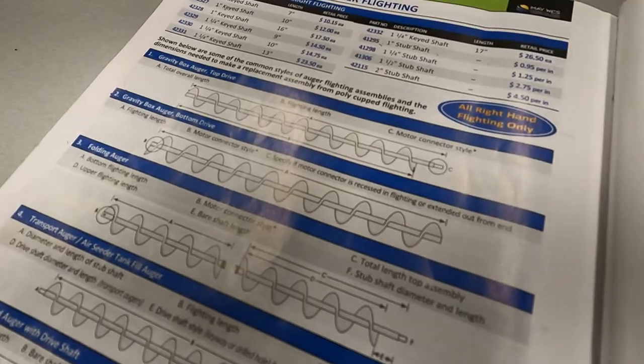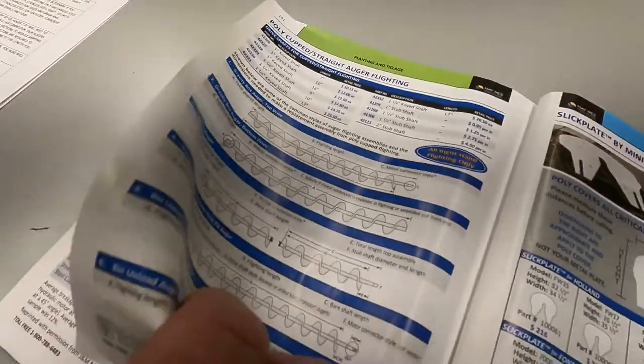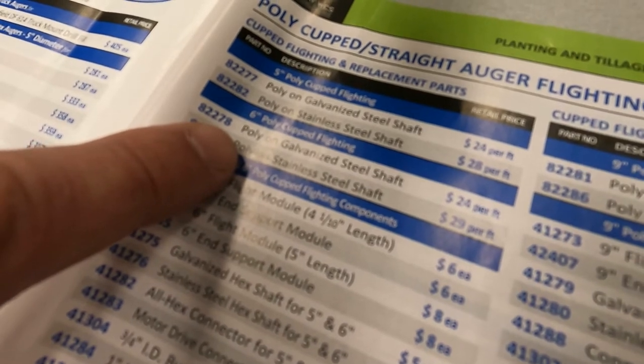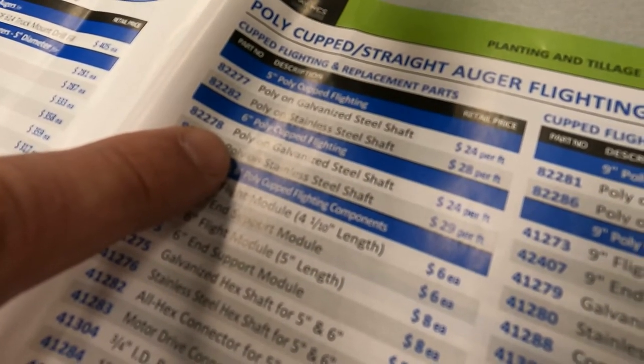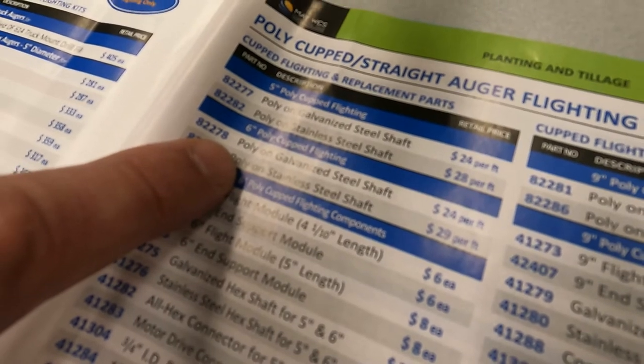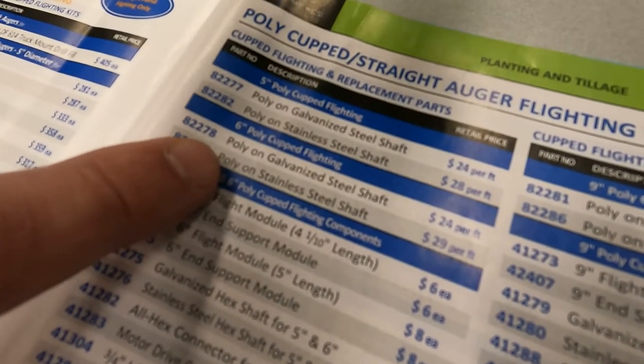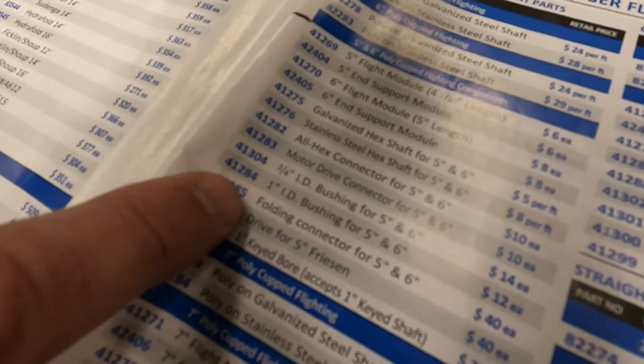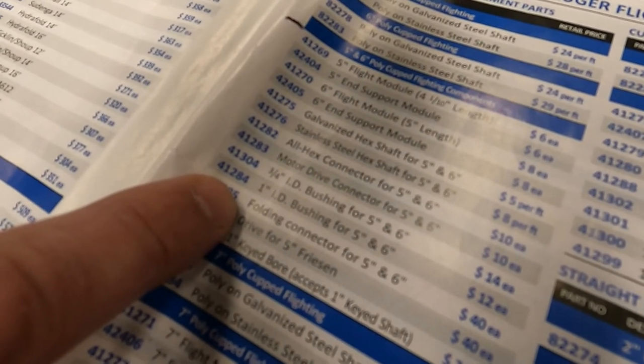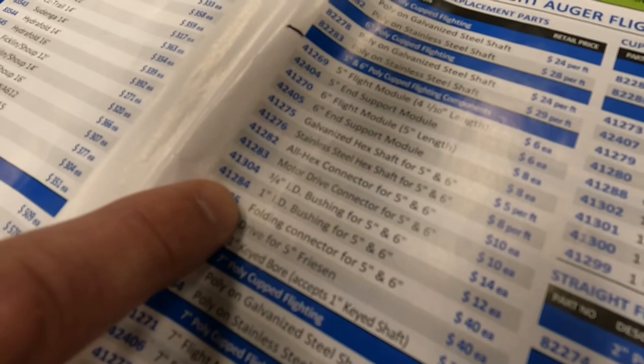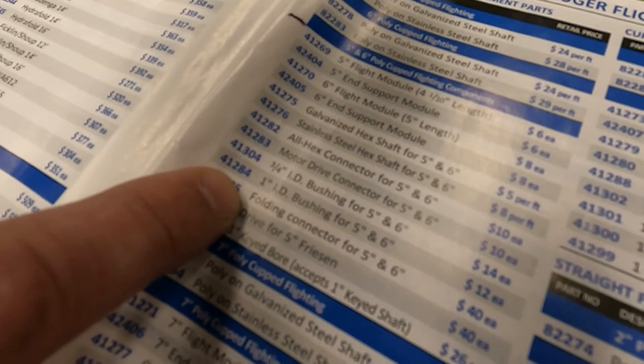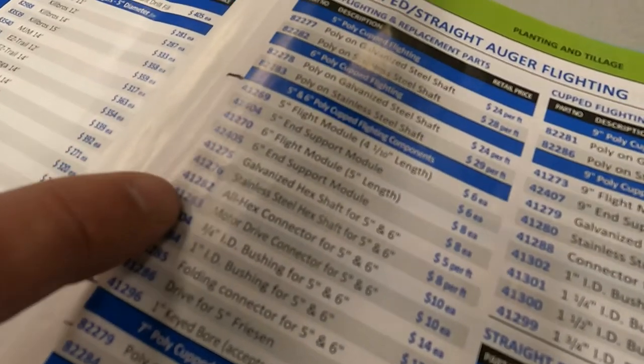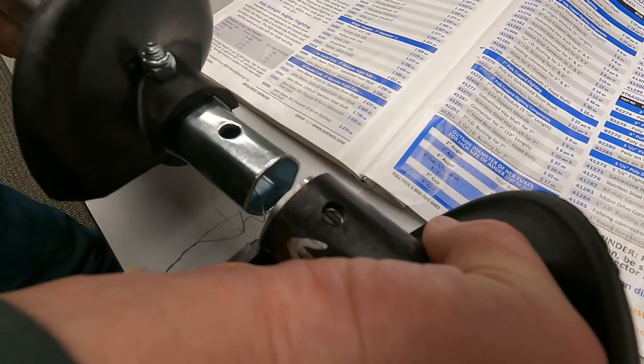To place my order, I will need 16 feet of poly-cup flighting on a galvanized steel shaft. I will also need a one inch ID bushing to accept my one inch stub shaft. Because this auger is more than 10 feet, I will need one all-hex connector.